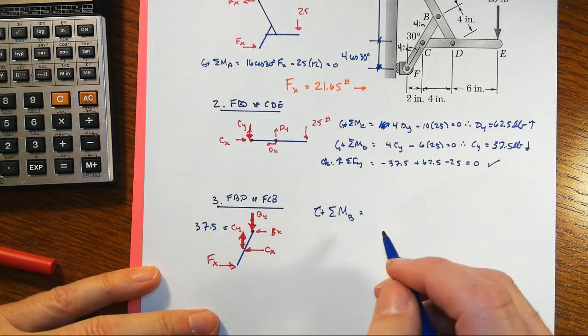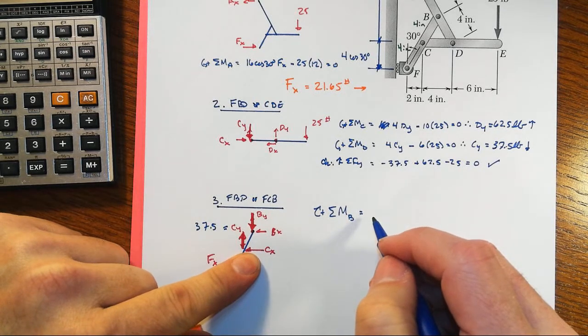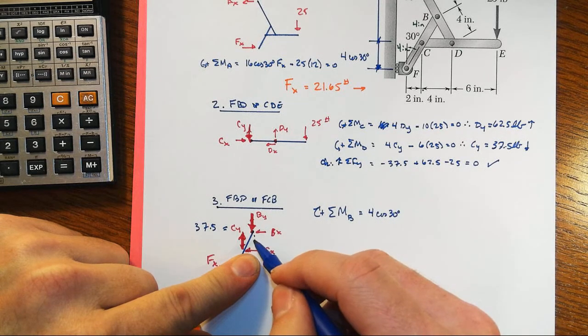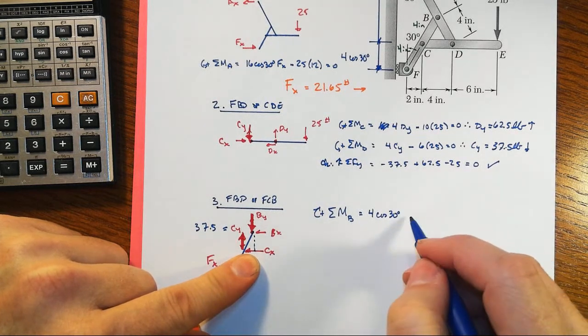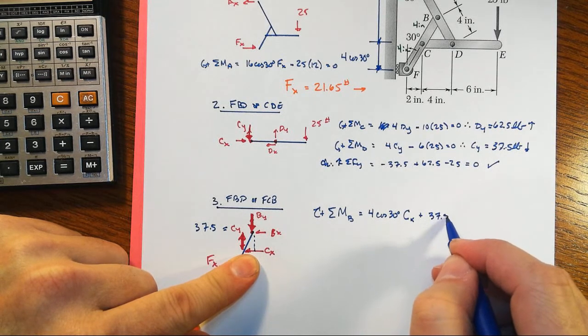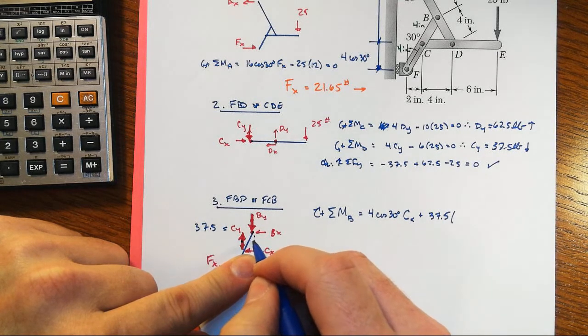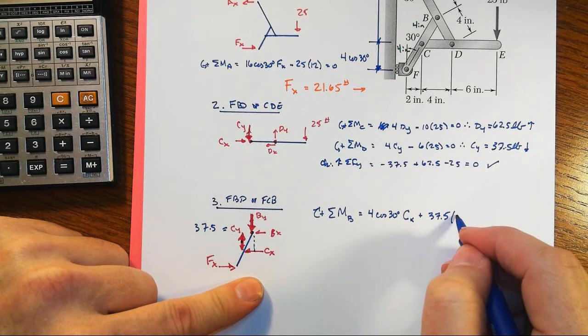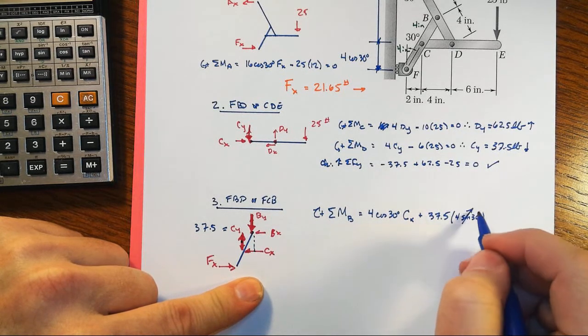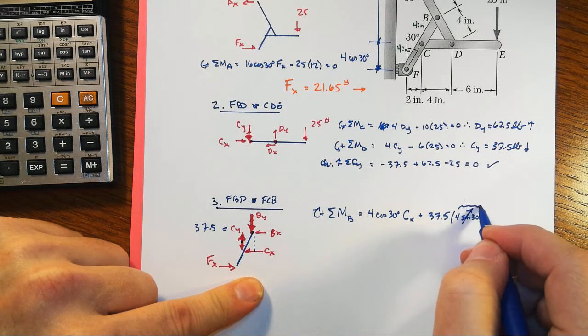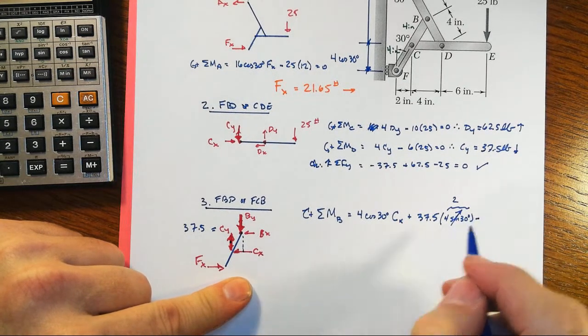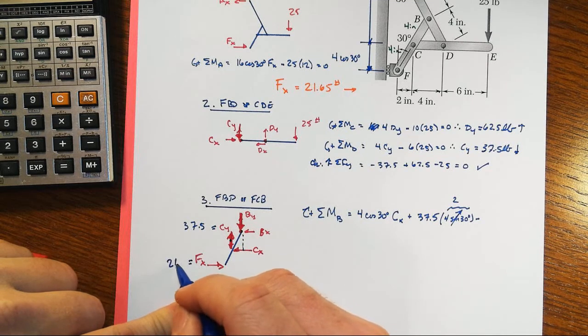So let's take clockwise as positive. We'll have for this one 4 times cosine 30 degrees—that's this distance right here—times CX, plus 37.5, that's CY, just this little short distance. That will be technically 4 times sine of 30 degrees, but of course sine of 30 is one-half, so we'll have a total out of this of 2 inches, and then minus—let's see, our FX was 21.65 in the direction it's showing.